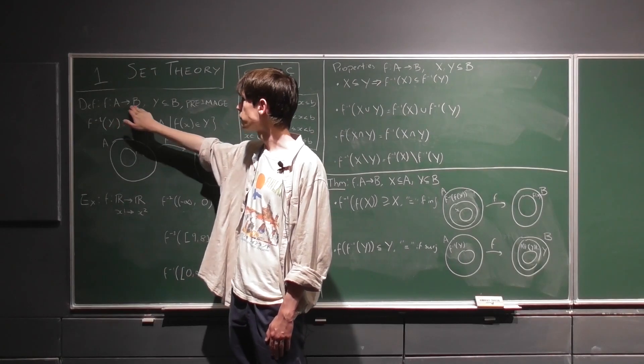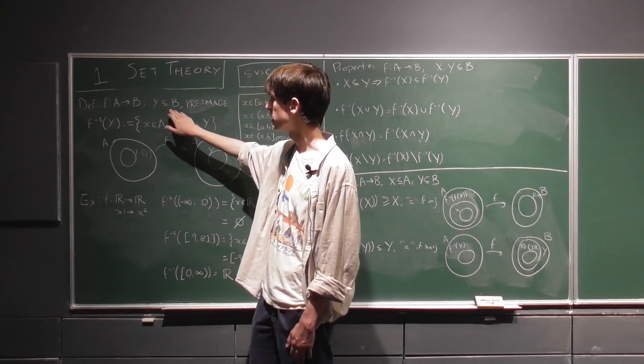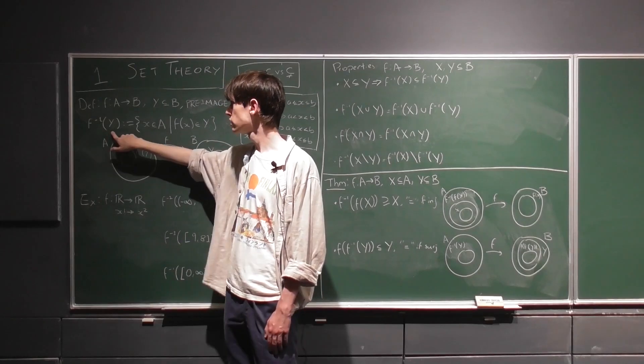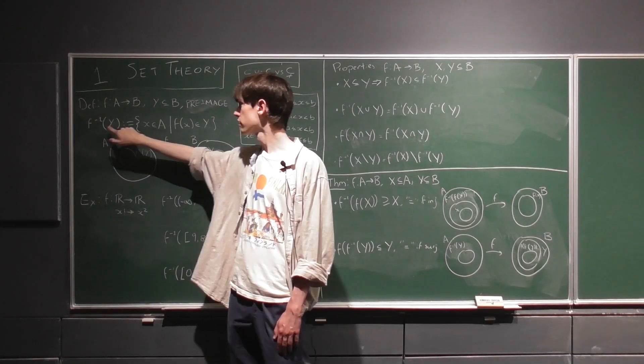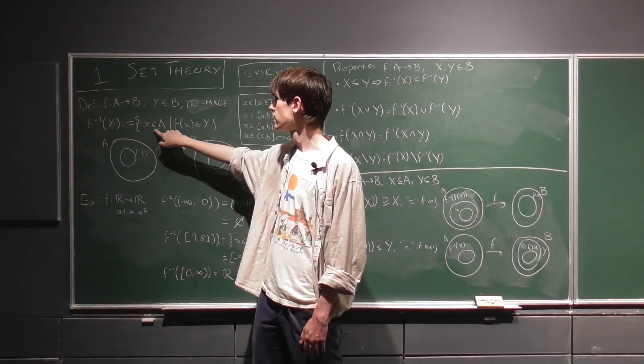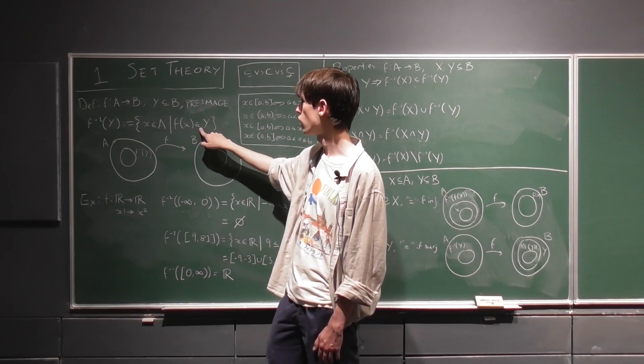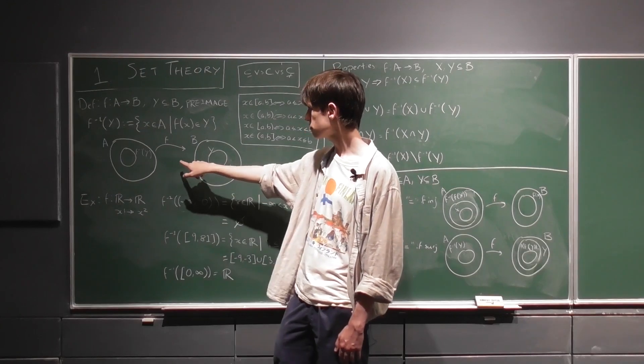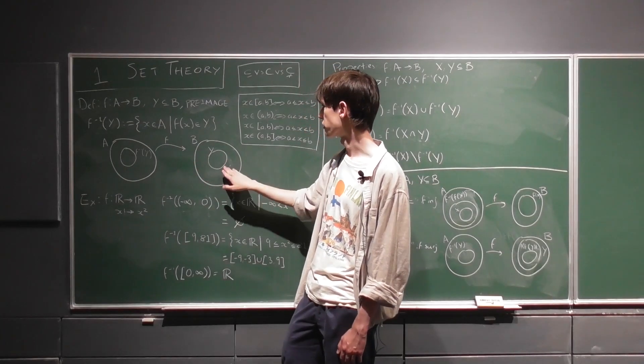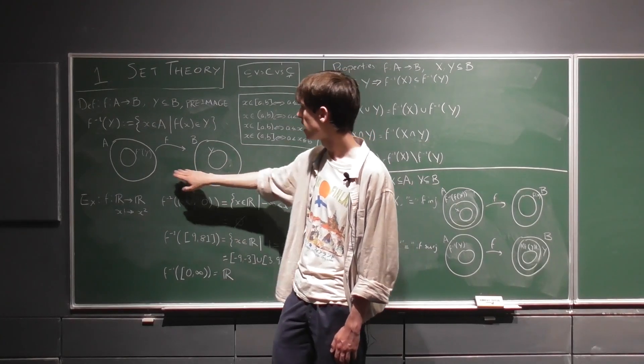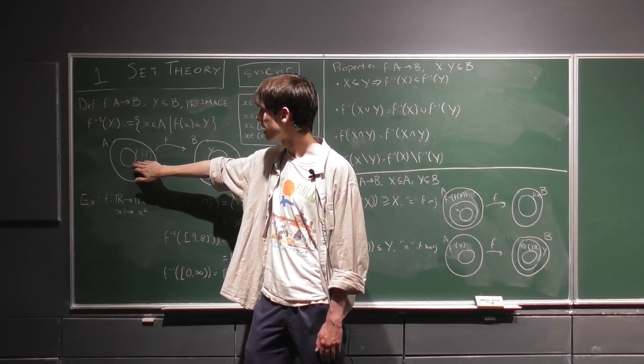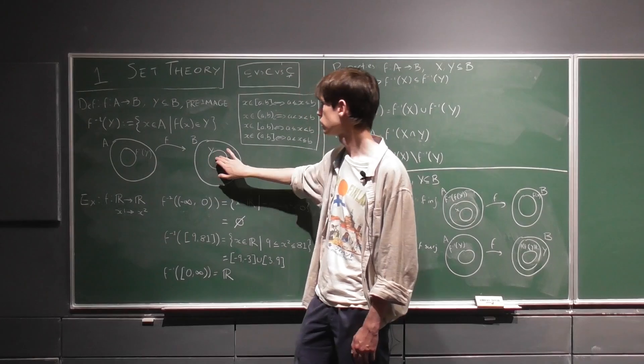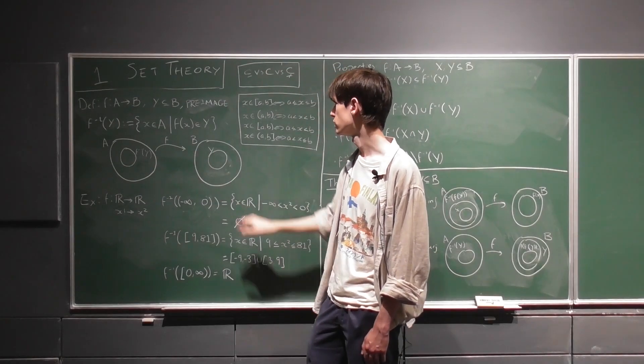So here, if we have f mapping a to b, and y just some subset of b, the pre-image here of y under f is all the elements in a that get mapped to y under f. So we can just see the picture here, y living in b, and the pre-image of y living in a. So all of this is going to get mapped into y.